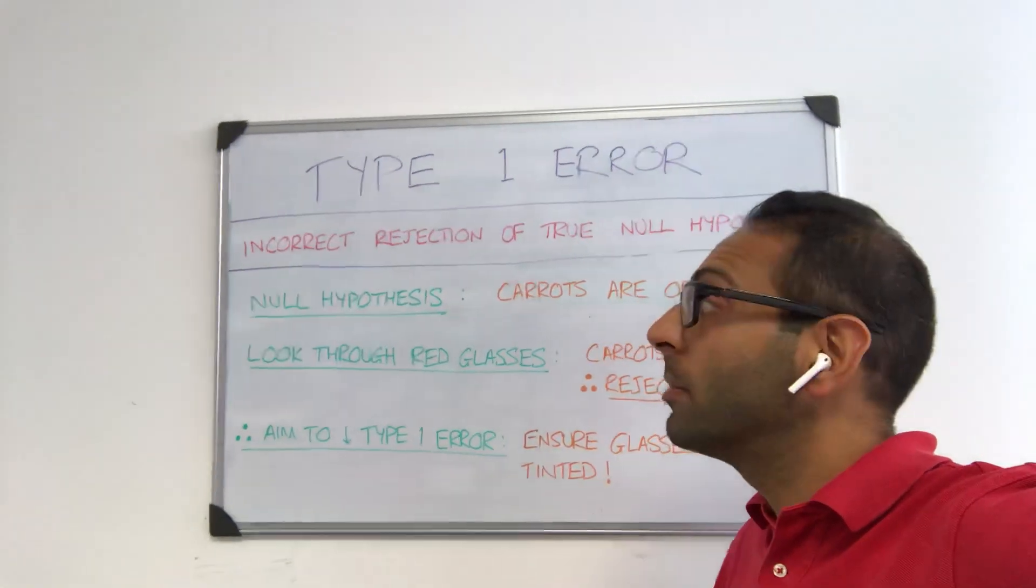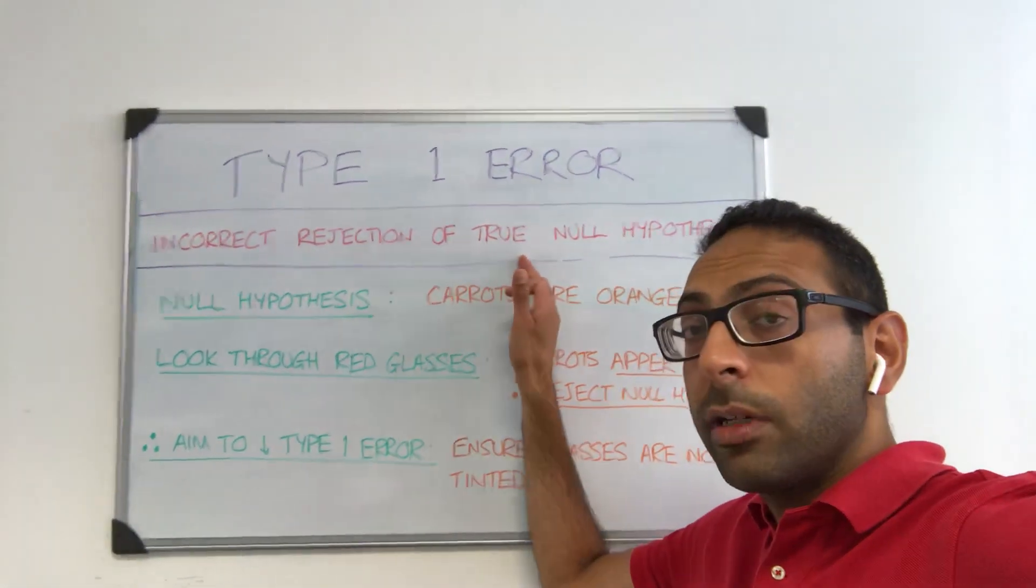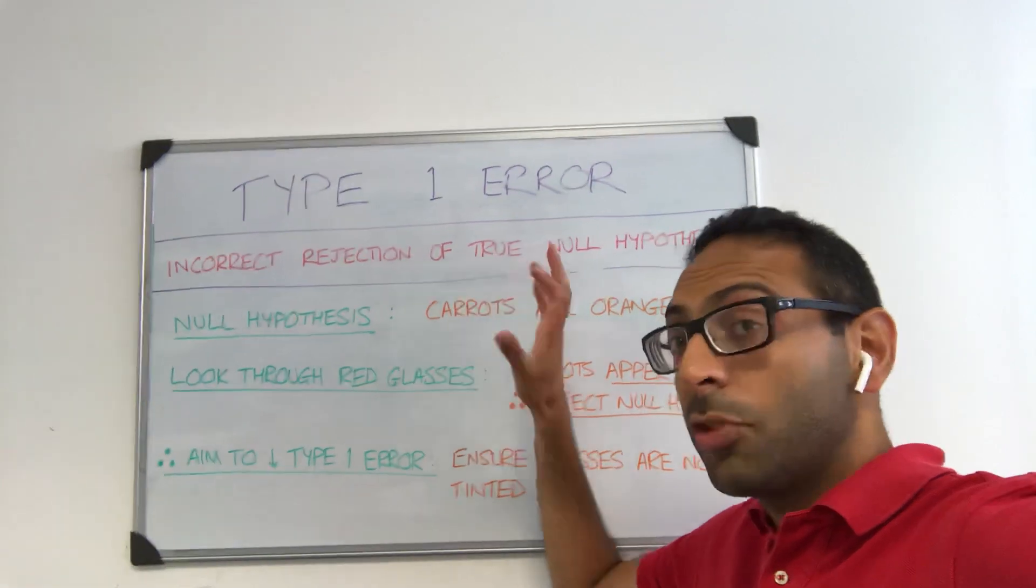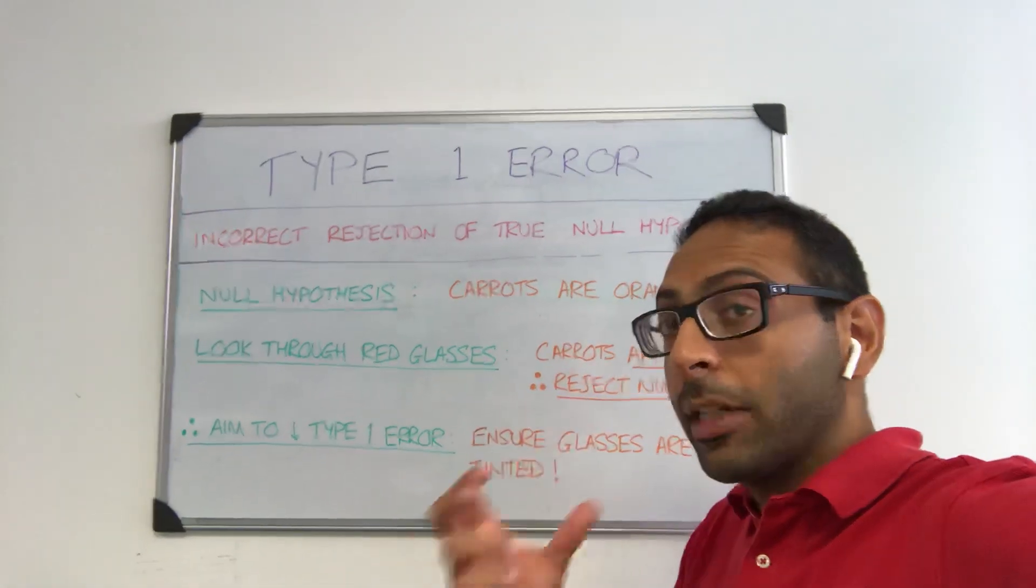Now a type 1 error, remember, is when you incorrectly reject a true null hypothesis. So the hypothesis is true, but we incorrectly reject it.